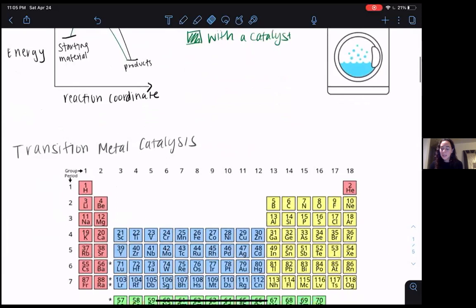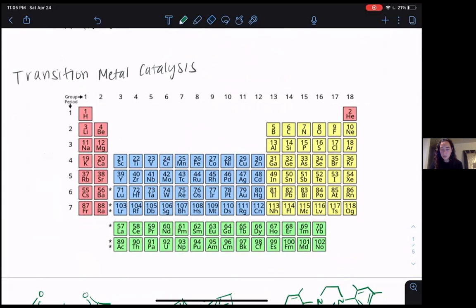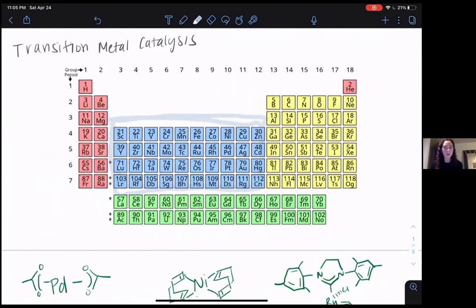In the Engle lab, and in a lot of chemistry labs, transition metal catalysts are used. The transition metals are all the metals seen here in blue, and as catalysts, they have a lot of special properties, and they lower the activation barrier for a lot of reactions that are useful in various industries, such as the pharmaceutical industry.